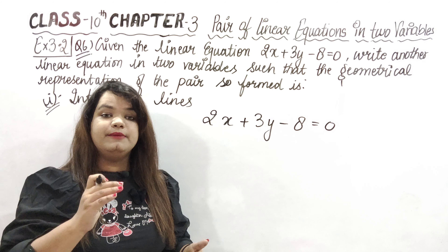Now a2, b2, c2 values have been determined. Let's form the equation: a2 is 2, so 2x; plus b2 which is 3, so 3y; c2 is minus 6, so the second equation becomes 2x plus 3y minus 6 is equal to 0. It is not necessary that you take the same c2 value I took — you can take any value, as long as it is different from this one so that the third ratio is different and your work is done.